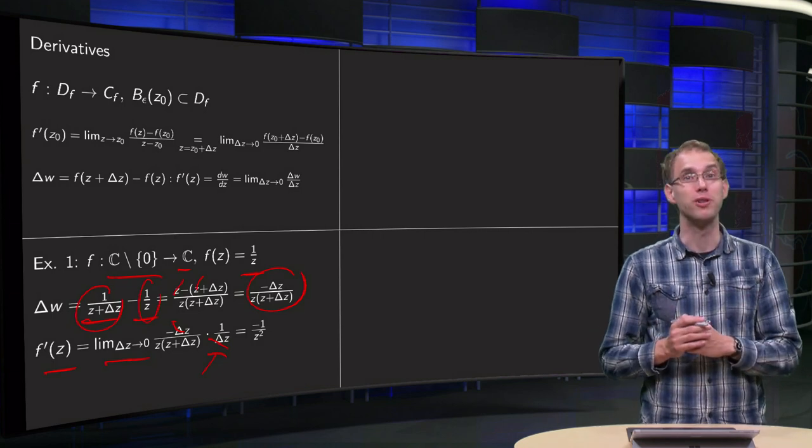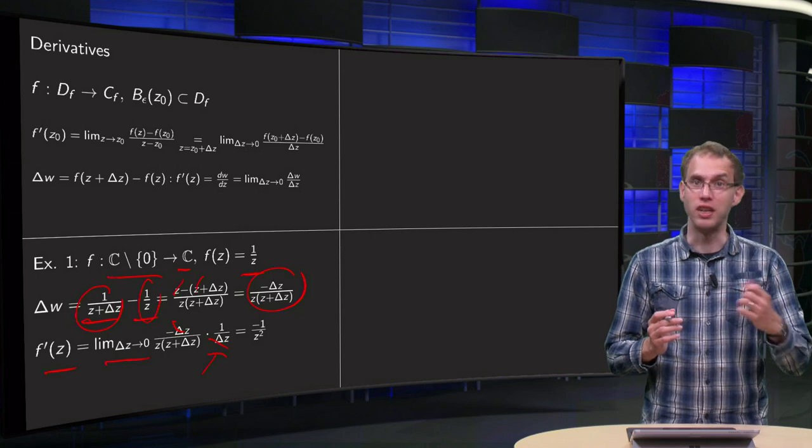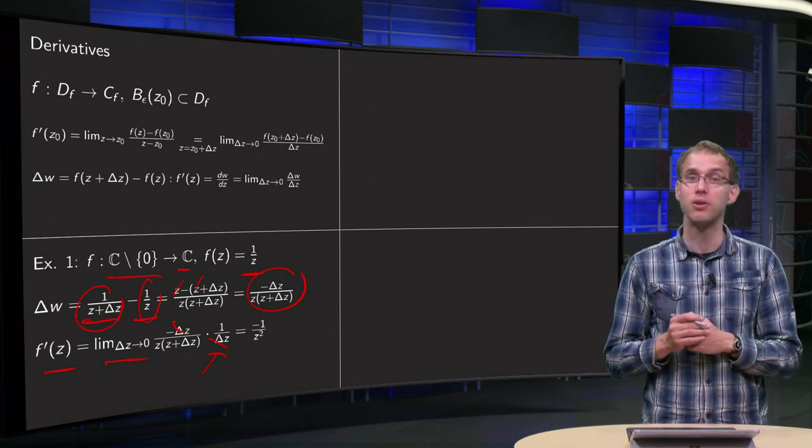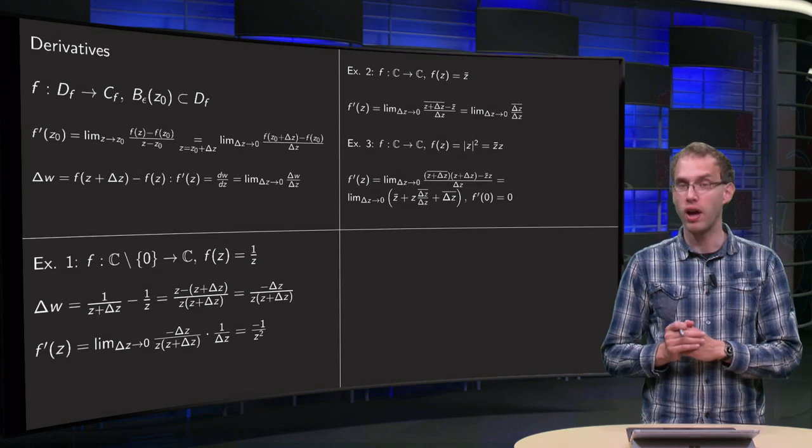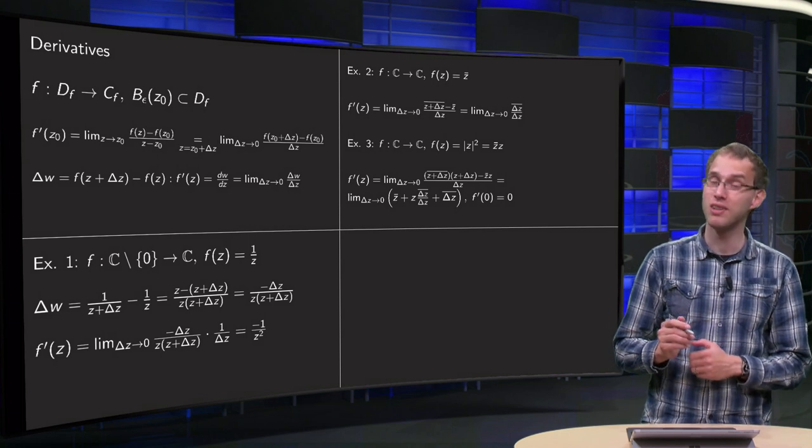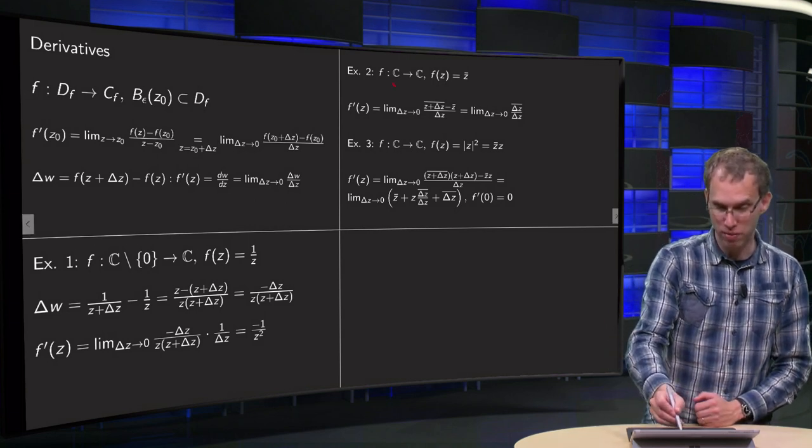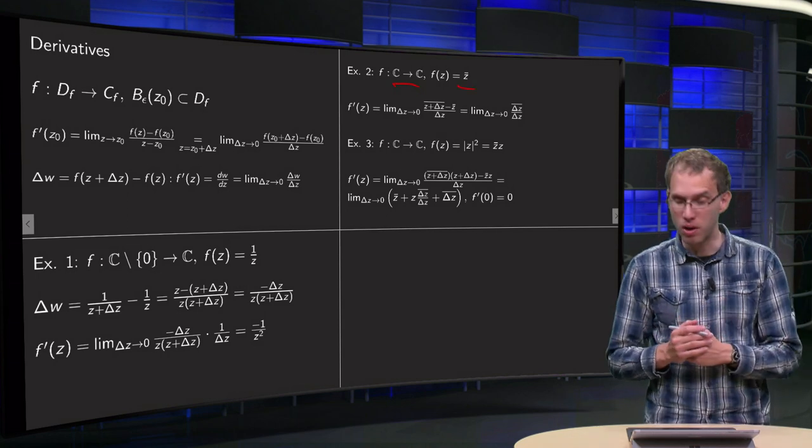Well, probably won't surprise you because it's analogous to the real case. And that's not so strange because the definition is also very similar to the definition of the derivative of a real function. Do we have differences then with the real functions? Yes, let's take a look at a second example where we take f from C to C and we take f of z equals z bar. Doesn't look too hard, right?